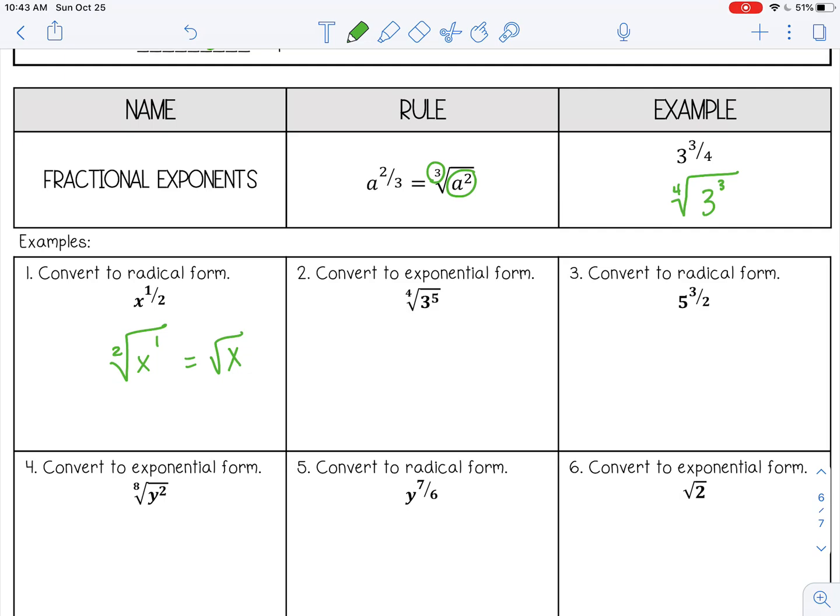Number two, the fourth root of 3 to the fifth power. So this is going to be 3 to the 5 over 4 power. So remember, the root goes in the denominator. The exponent is the numerator.